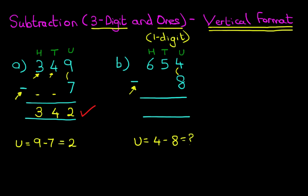Now, because 4 is less than 8, we cannot do this. So what we're going to have to do is take 1 from the digit on its left — in this case, the 5. We cross out the 5, and since we take 1, 5 minus 1 is 4. The 1 we have taken is moved to the units column. So the units have now become 14 minus 8. What is 14 minus 8? You know this from your mental arithmetic — 14 minus 8 is 6. So we write that down: it is 6.